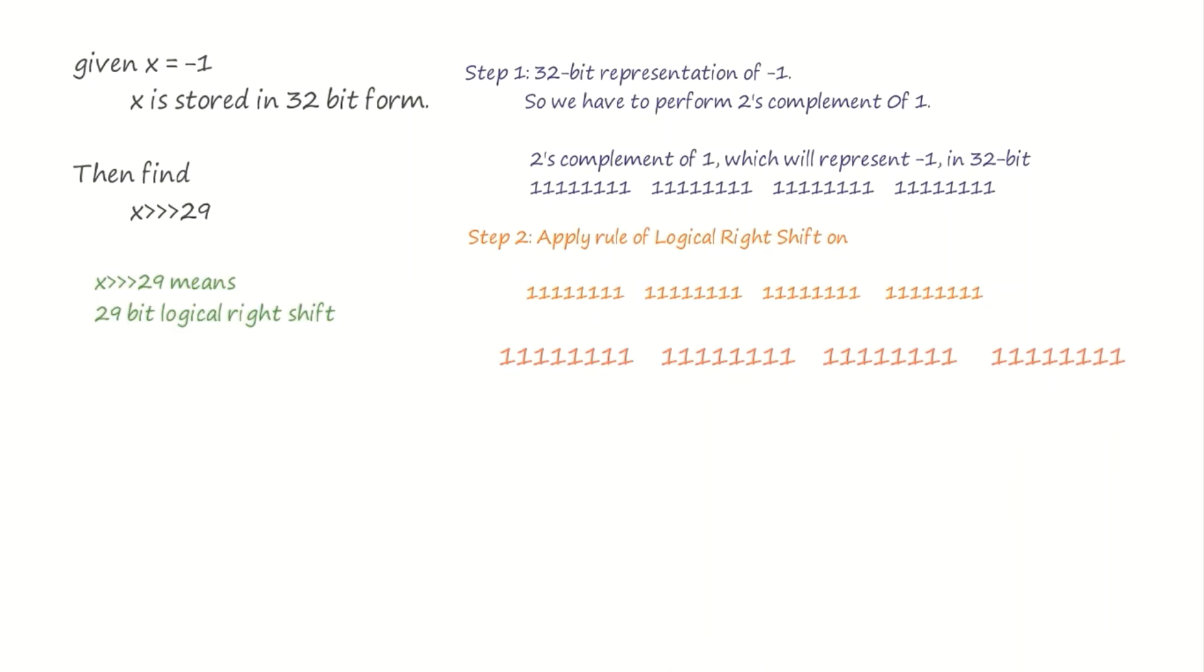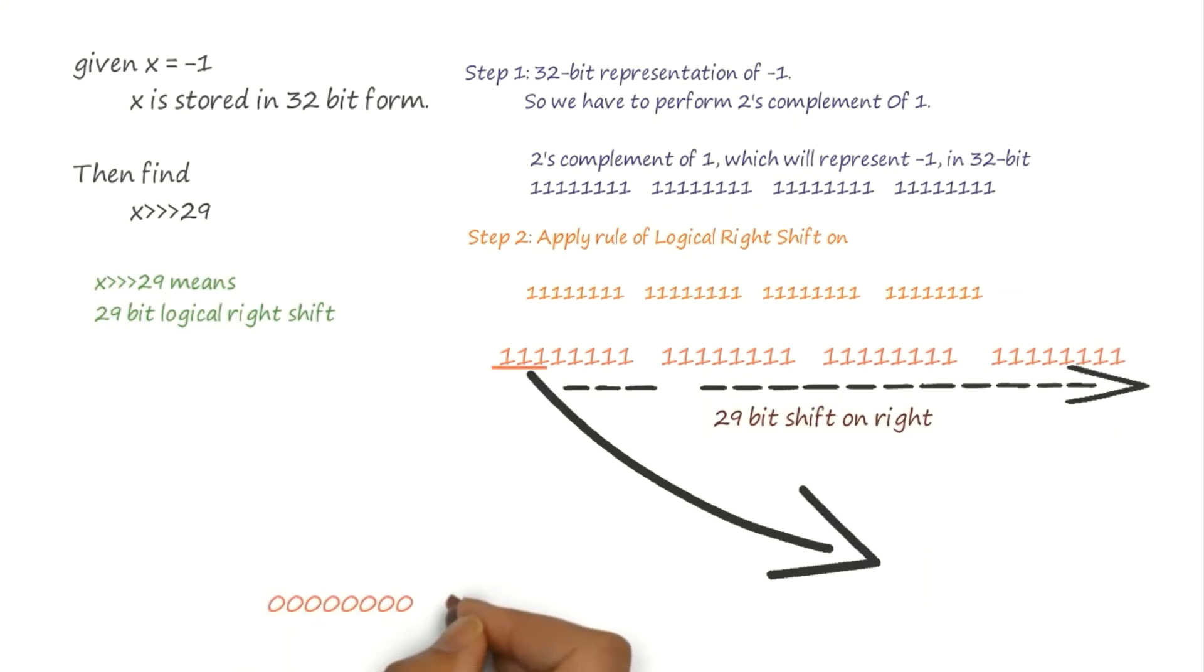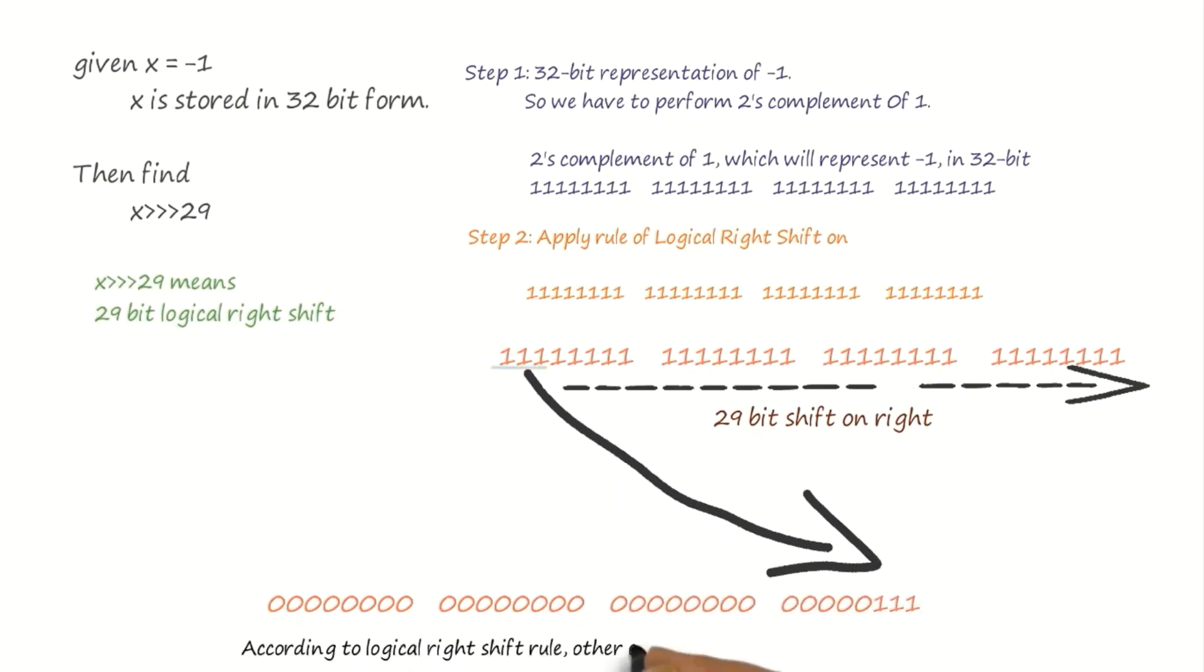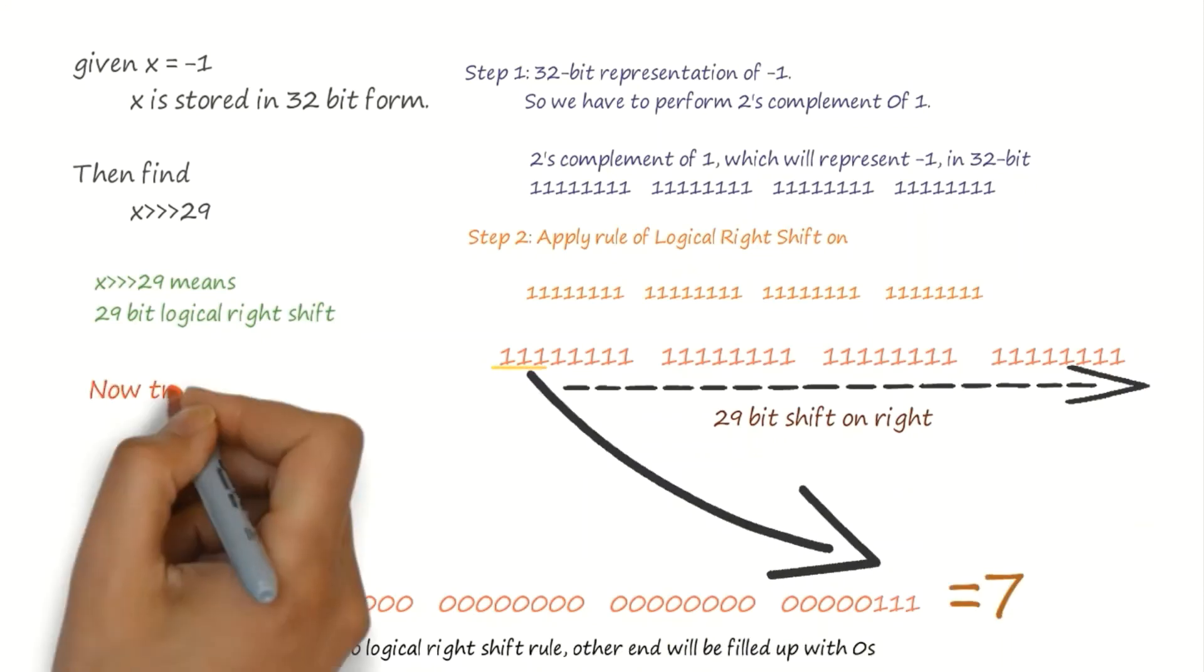Step 2 is to follow the rules of logical right shift where right 29 bits will be lost. Three ones remaining at extreme left will be moved to extreme right, and all the other bits will be filled up by zeros. It results in 7.